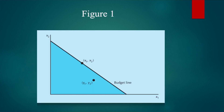Now consider this figure where we have depicted a consumer's demanded bundle x1, x2 and another bundle y1, y2 that is beneath the consumer's budget line. The bundle x1, x2 is assumed to be demanded by the consumer, and it is quite clear that the bundle y1, y2 was also affordable to the consumer as it lies inside the budget line.